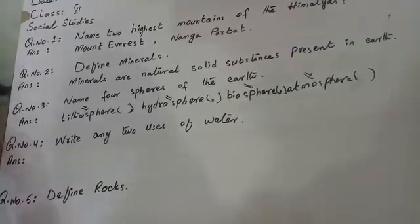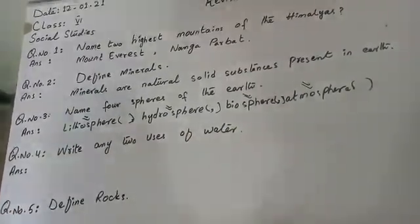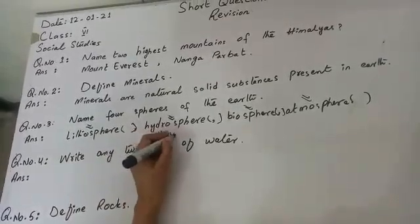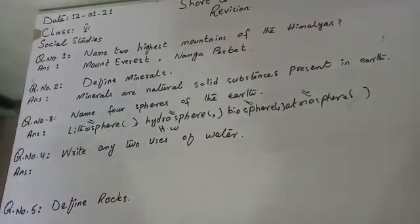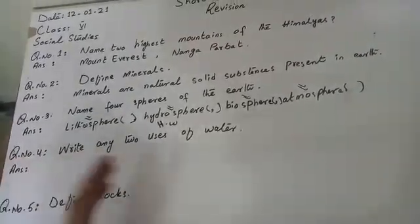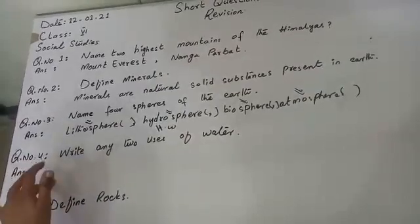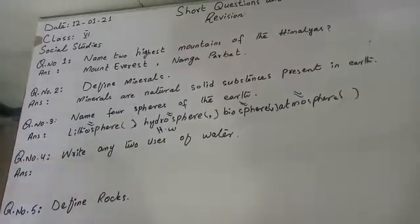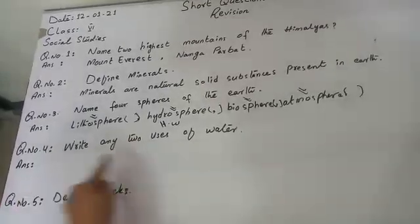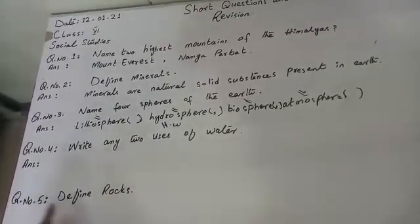Question number four: write any two uses of water. This is a homework question. Uses of water is a very easy question — you can write two uses on your own. For example, water is used for cooking, drinking, washing clothes, washing hands, and so on. There are many uses of water; write any two.